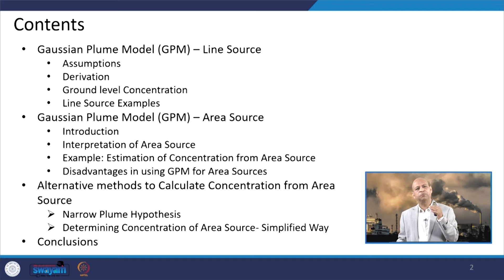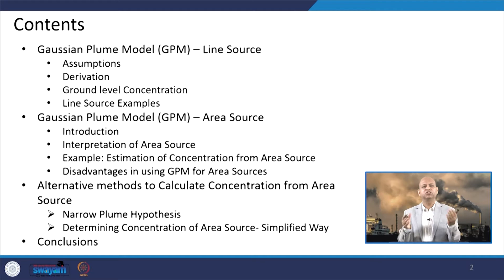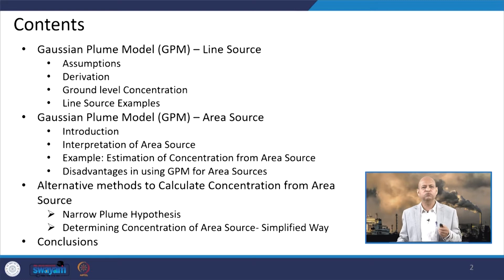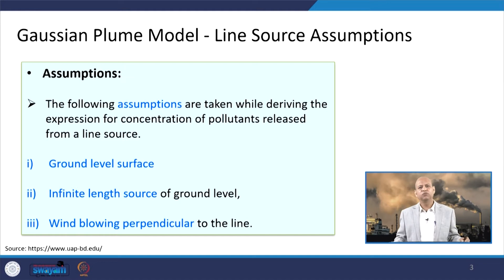For area source modeling, we either apply the point source model by extending it to some distance in the upwind direction and assuming a virtual source that emits the complete emission from the area, or we divide the area source into several stripe line sources and integrate. There are multiple ways, and we will see how these different methodologies work for line source and area source modeling.